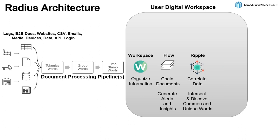Our unique IP is that we tokenize these words, group them, and timestamp them, so it gives you the ability to work with really any set of information and bring it into what we call a workspace. A workspace is basically an organizational folder that represents the data you're working with, or the people, or the process you're working with. All of the information that comes into the enterprise generates something else — we have what we call a ripple — and this flow is a chain of these documents.